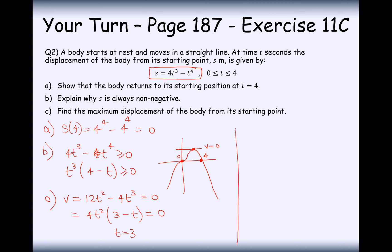Right then, so what we need to do then is substitute 3 back into the displacement here. So s of 3 is going to equal 27 times 4, which is 108, minus 81, and that's t to the power of 4. So take away 81, and we get 27. So the maximum displacement away from the origin is going to be 27 metres.